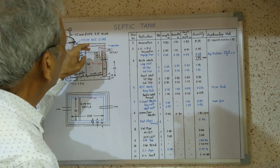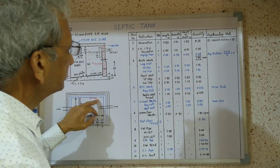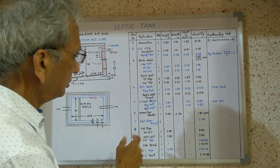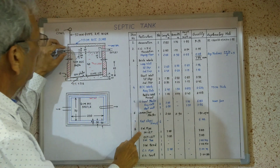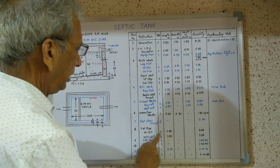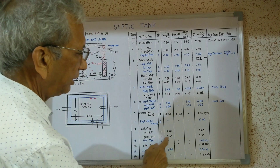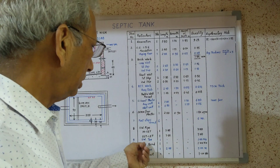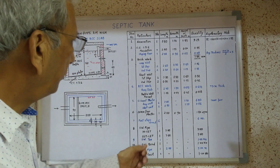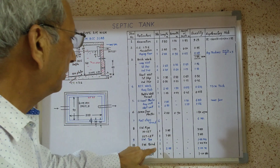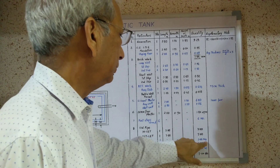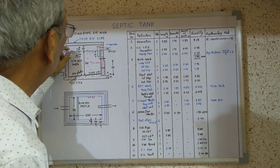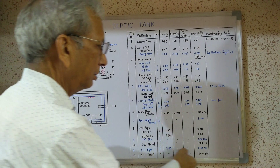Six number iron steps of 16 mm diameter steel are provided. Next item is SW (stoneware) pipe for inlet pipe — we take 3 meters — and for outlet pipe going to the soak pit we take 3 meters, totaling 6 meters. Next is one number stoneware T-fitting at the outlet, and one number stoneware bend.